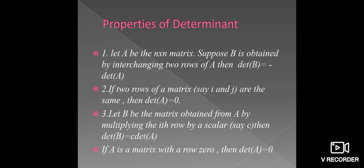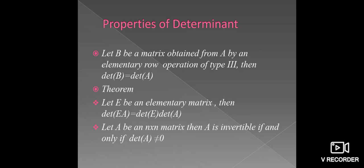If B is obtained from A by an elementary row operation of Type 3, then det(B) = det(A).